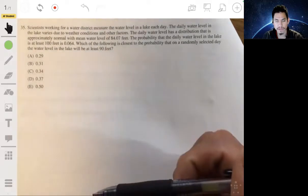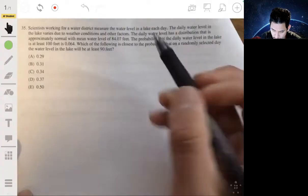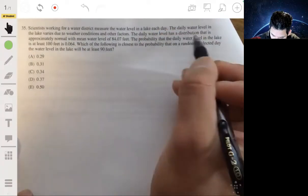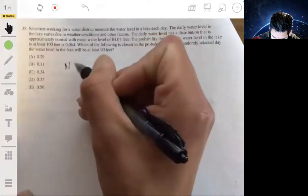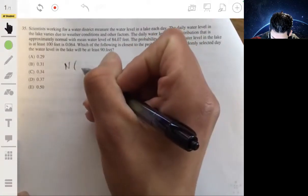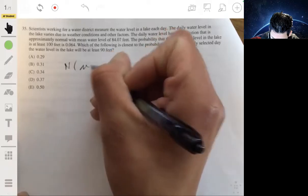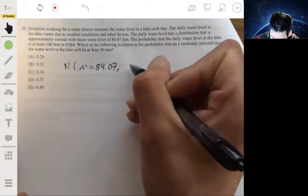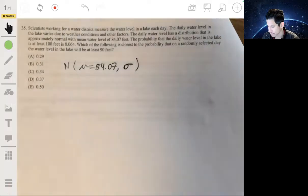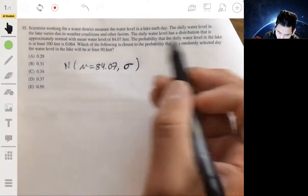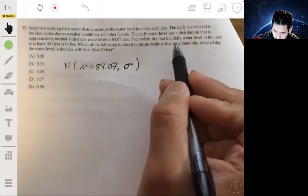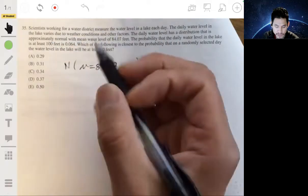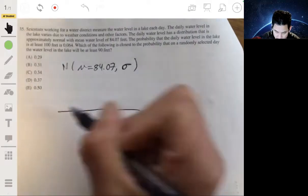Okay. So here we got to do some calculations. Let's have our normal distribution where the mean is 84.07. We don't know the standard deviation. That's what we're going to have to figure out. And we're given that the probability that the daily water level in the lake is at least 100 feet is 0.064. Let's draw a visual.